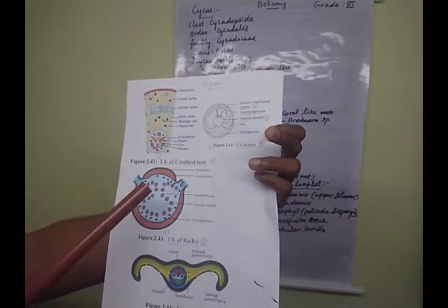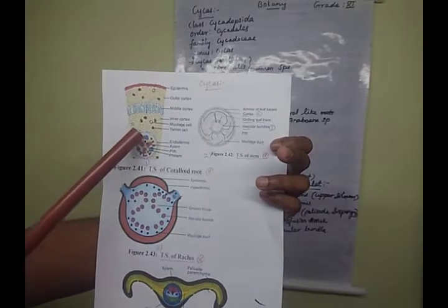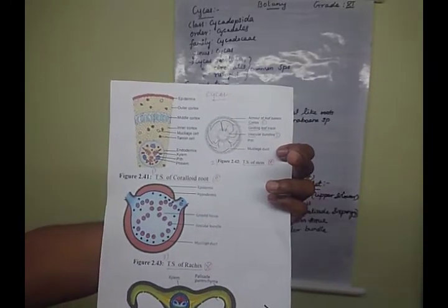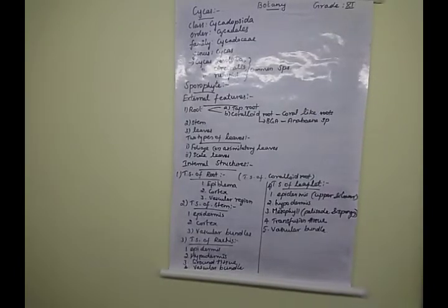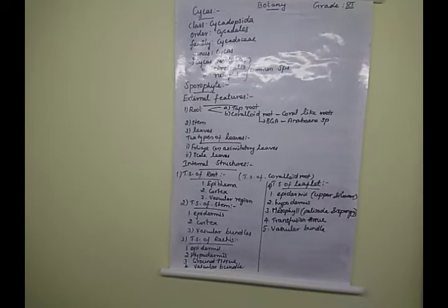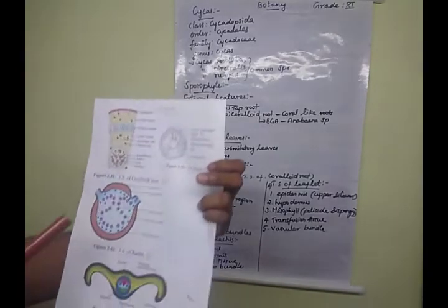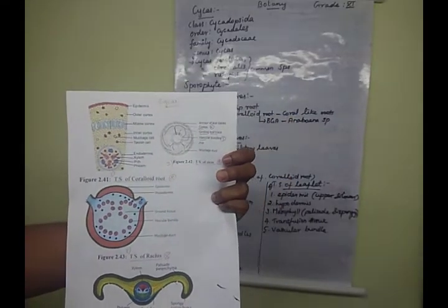What is the type of xylem bundle present in the coralloid root TS? They are in a triarch condition — triarch means three — so three bundles of xylem are present inside. This is the exarch condition. In exarch condition, the protoxylem is towards the periphery and the metaxylem is towards the center.